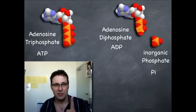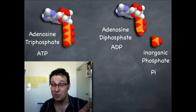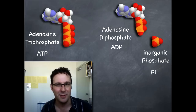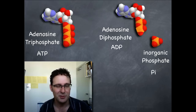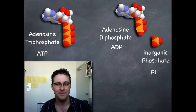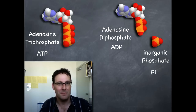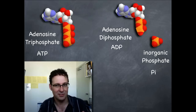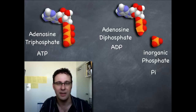So just to recap quickly: there's adenosine triphosphate with three phosphates, adenosine diphosphate with two phosphates, and there's also inorganic phosphate ions. They're no longer part of a molecule that has carbon and hydrogen bonded to each other, so we call them Pi — inorganic phosphate.